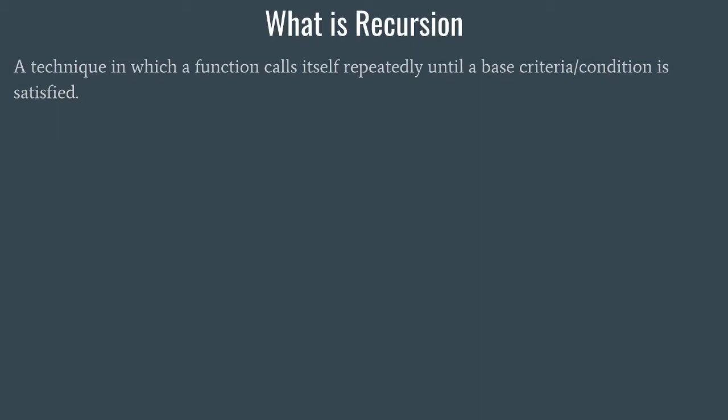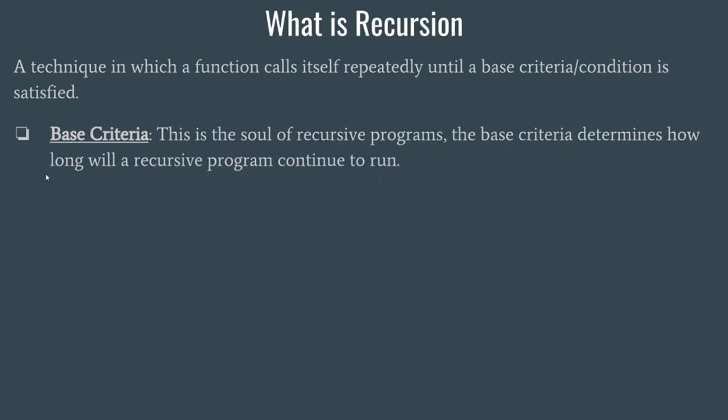Every recursive function has two properties. The first one is the base criteria, which is the soul of recursive programs, because it determines how long the recursive program will continue to run. If the base criteria is not given properly or is not a finite criteria, the recursive call will never end and the function will go into an infinite loop.